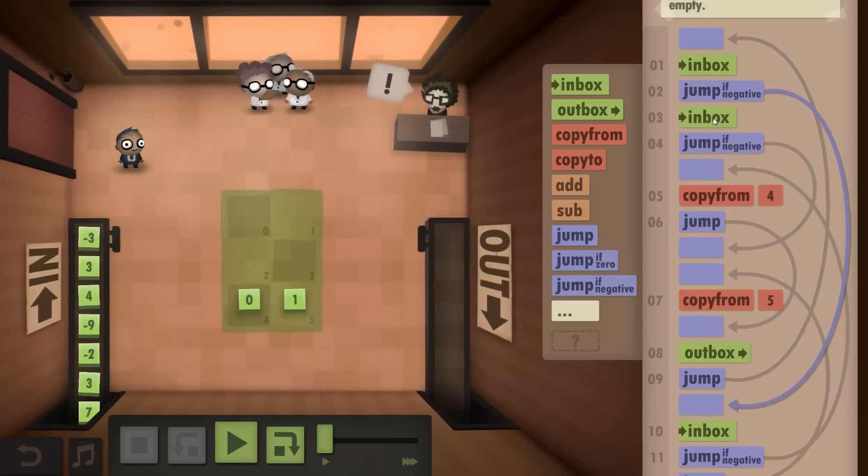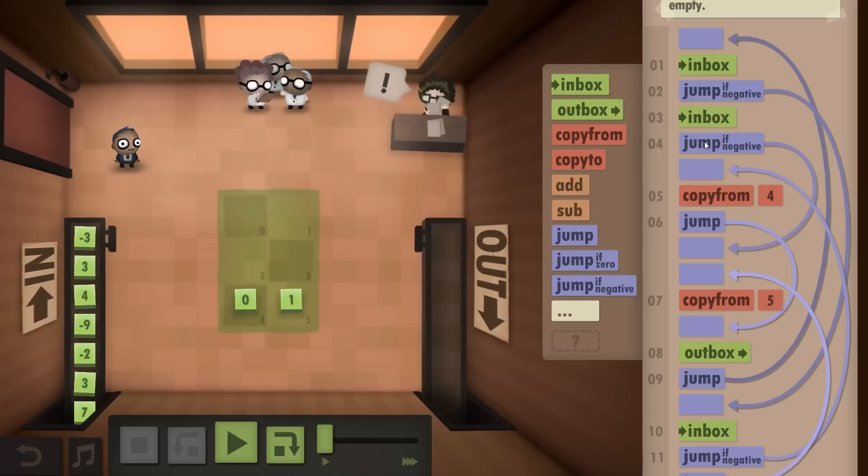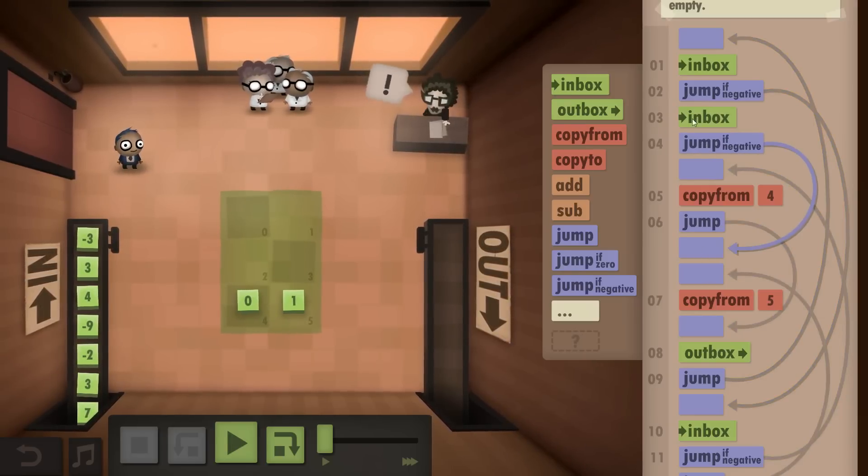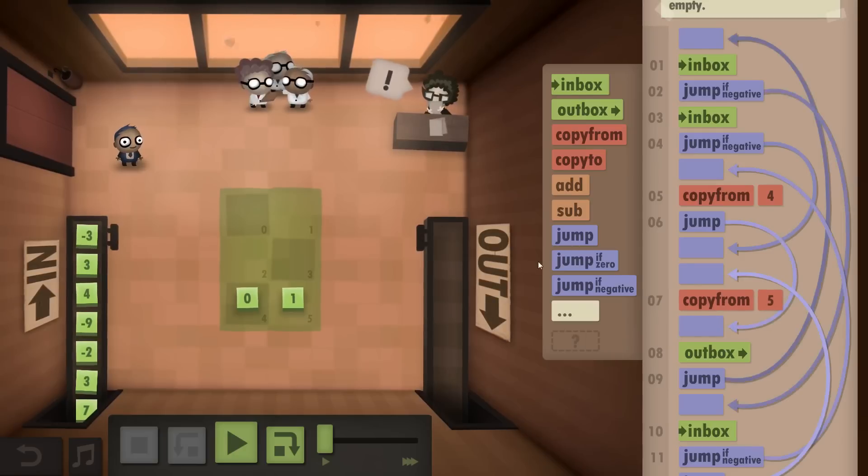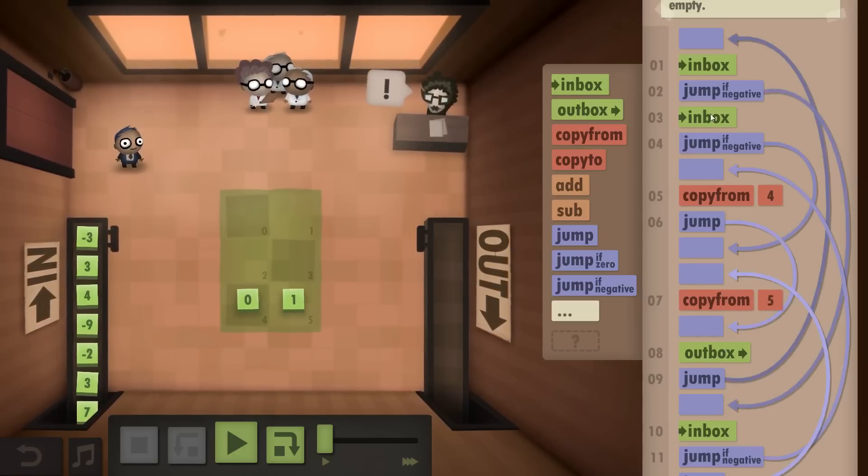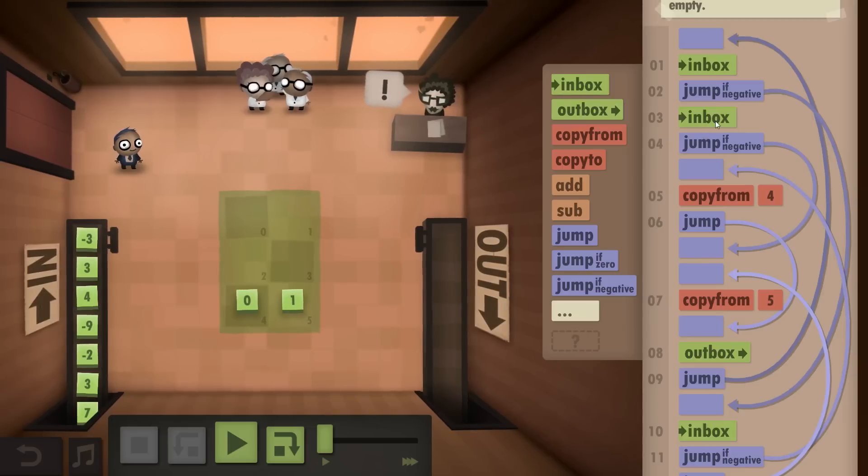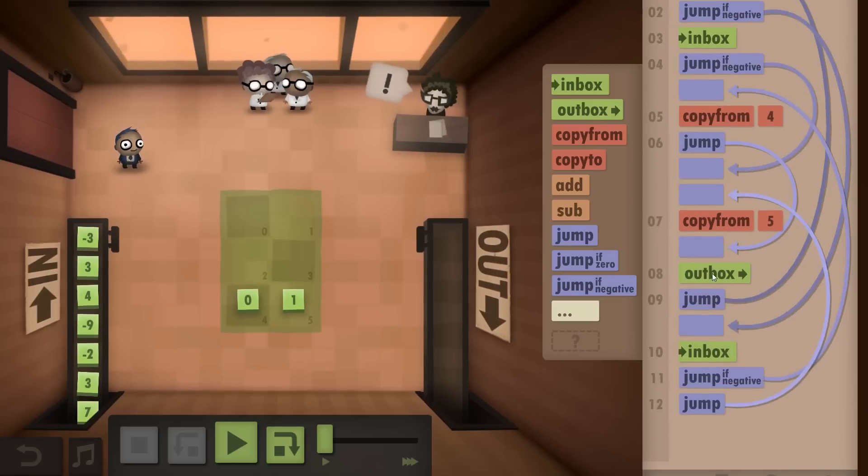If the first one is not a negative, you go to the Inbox again and check again if it's negative. If it's negative, they have different signs. You have a positive and a negative. In that case, you copy from 5, which is the 1, put that to the Outbox. If it's not negative, you copy from 4 and then you jump down here to the Outbox.